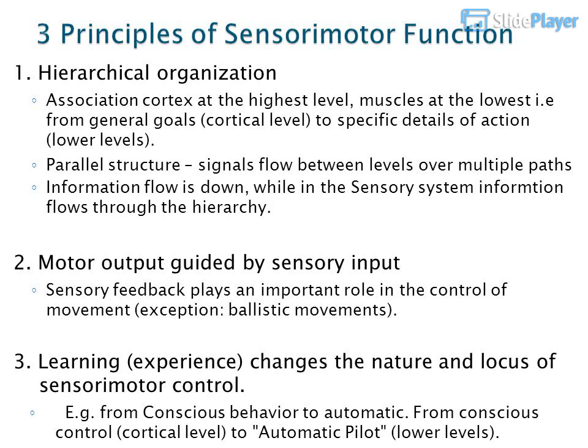Principle 1: Hierarchical Organization. Association cortex is at the highest level, muscles at the lowest. Information flows from general goals at the cortical level down to specific details of action at lower levels. There is parallel structure, with signals flowing between levels over multiple paths. Information flow is downward, unlike the sensory system where information flows up through the hierarchy.